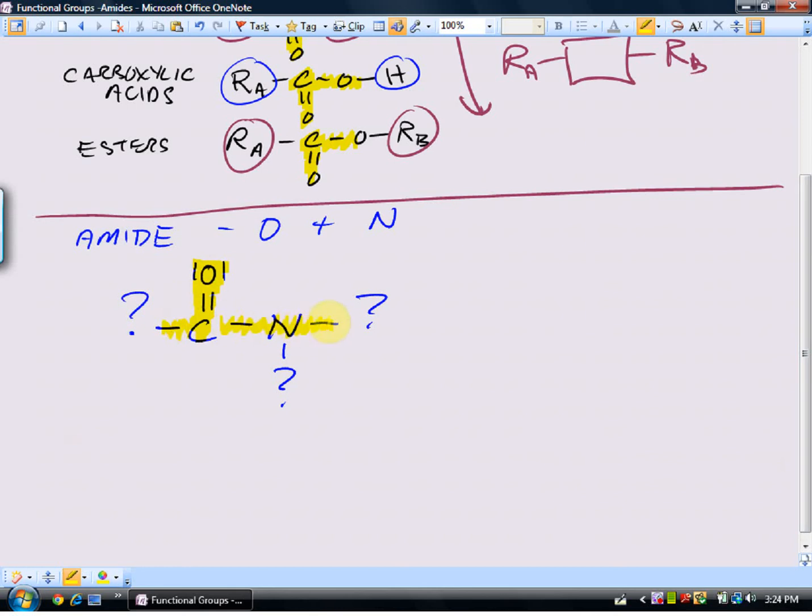And then nitrogen has to have three bonds, so there has to be something connected there. So the key part of an amide is this carbon-oxygen double bond connected to the nitrogen. And you're not surprised, the question marks in the simplest amide, all of the question marks equal what? Of course, hydrogen, our simplest atom. So our simplest amide would be this one. We replace all of those question marks with hydrogens.